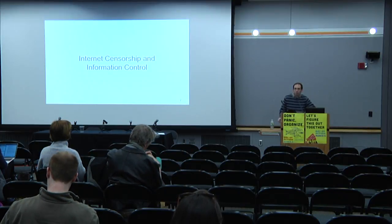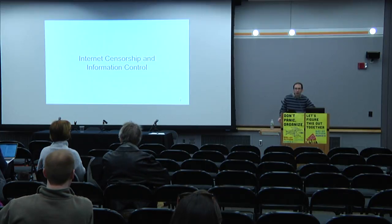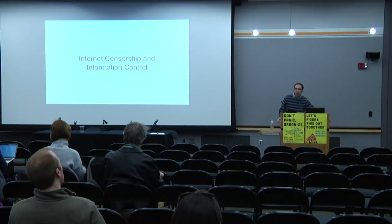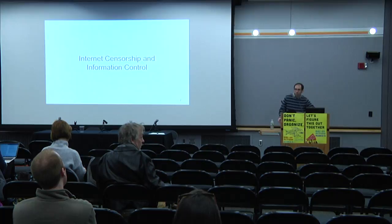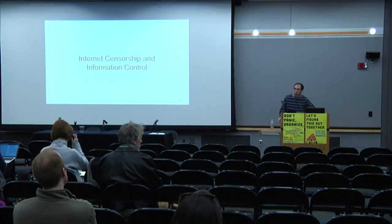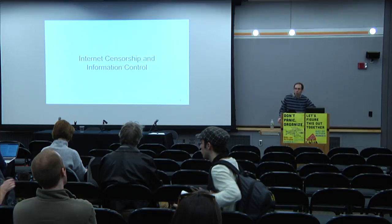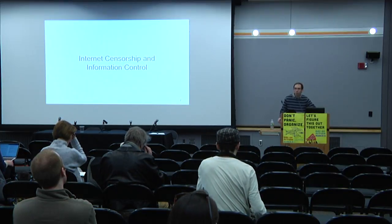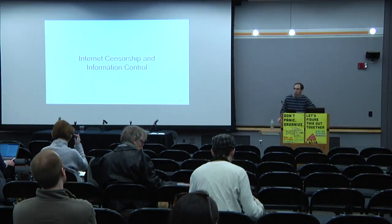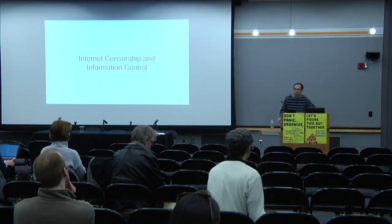There are various forms that censorship can take. It can be outright blocking, and I'll talk about that. But there are other forms — the other term I've used here is information control. If a government wants to control information, blocking is just one option. It can also do things like control what you can see or what comes back in your searches and things of that nature.